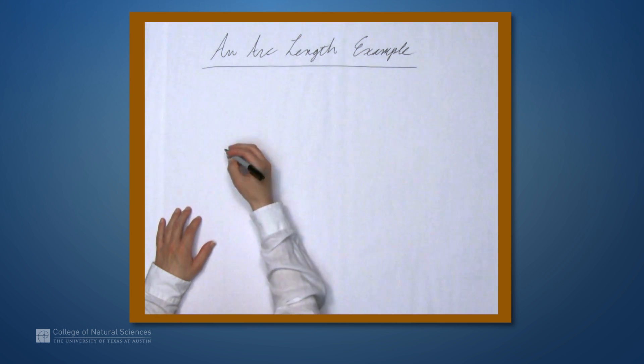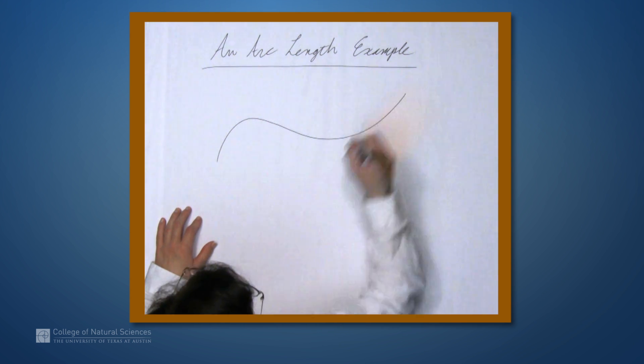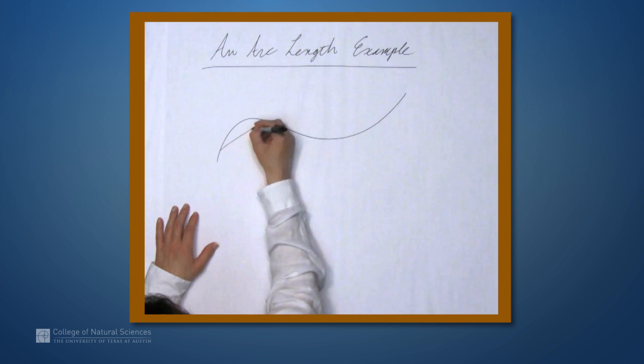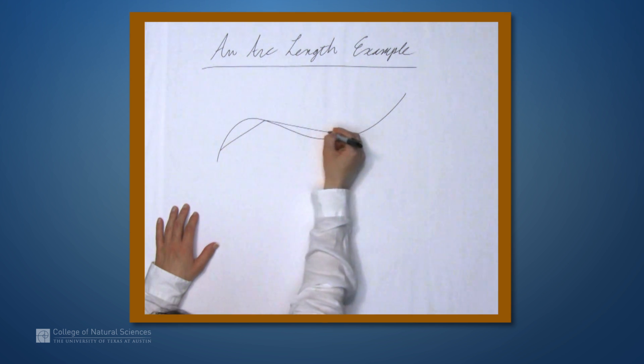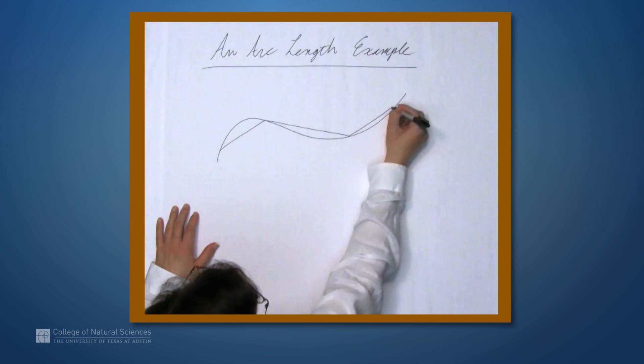So let's talk a little bit about the intuition. If we have a curve, we can approximate the arc length with line segments, something like this.